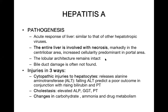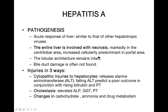Regarding pathogenesis, hepatitis A is a hepatotropic virus so the liver is the main organ damaged. The entire liver is involved with necrosis, predominantly in the central lobular area, with increased cellularity in the portal area. On histology, there are necrosed hepatocytes alongside increased inflammatory cells, but the lobular architecture remains intact — which is why there is a high chance of complete recovery. Bile duct damage is often not found.